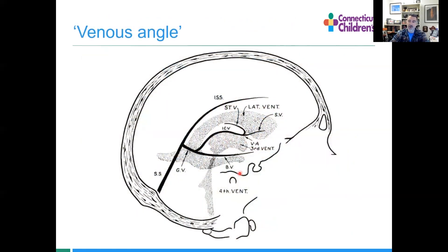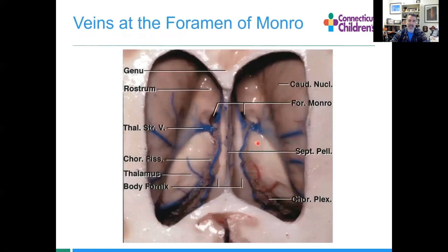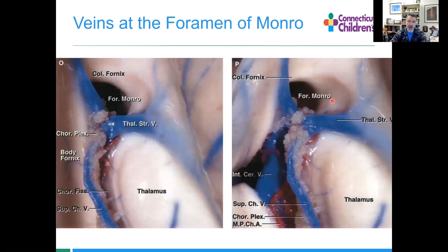If we look at the deep venous anatomy, a key to understanding where you are within the ventricle is this venous angle, formed between the thalamostriate vein and the internal cerebral vein. The thalamostriate vein curves up through the foramen and forms the roof of the third ventricle. You can find this online from Rhoton. We're doing a cone down view here of the foramen of Monroe.